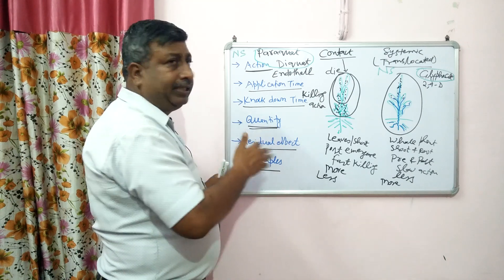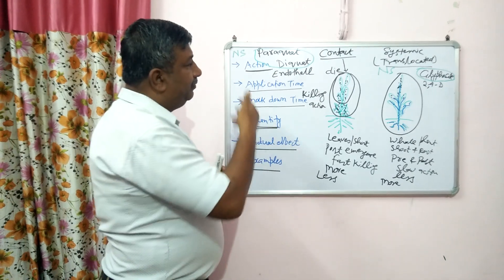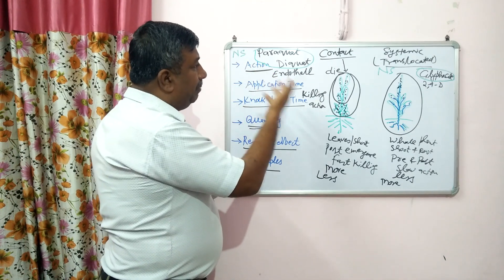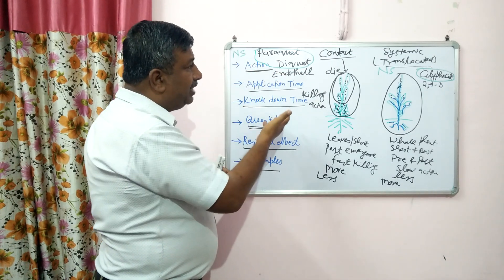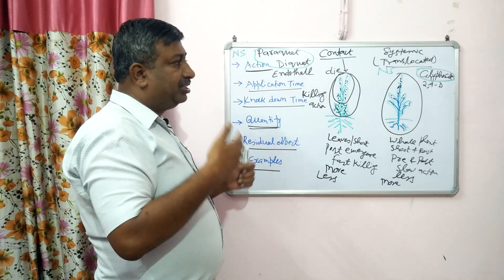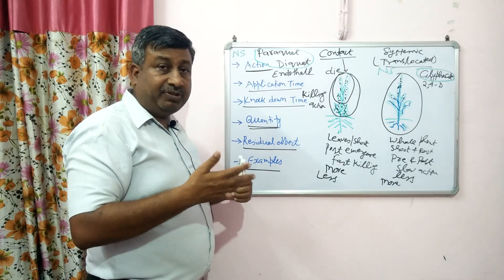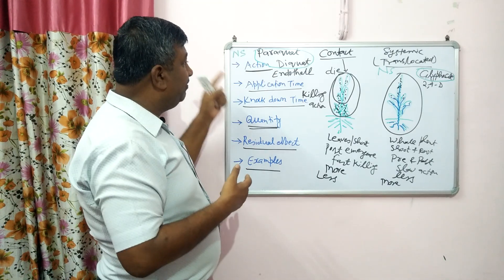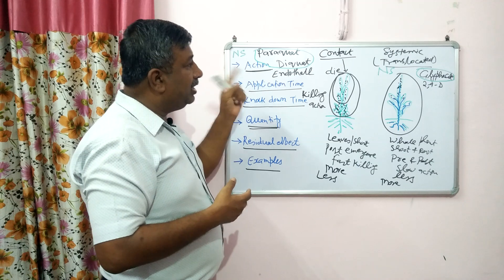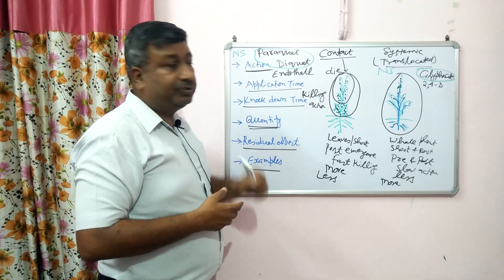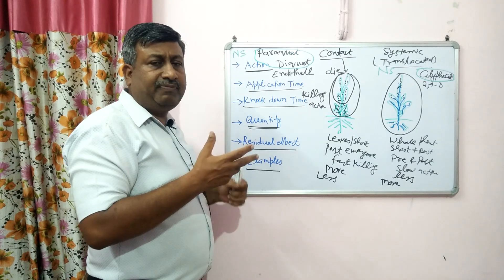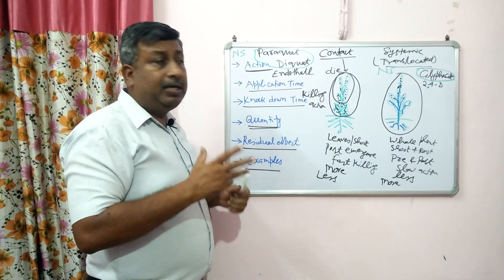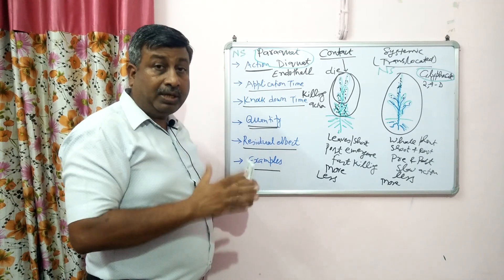For examination purposes: example of contact herbicide — paraquat, diquat. Example of systemic herbicide — glyphosate. Example of non-selective herbicide — paraquat, diquat, and glyphosate. Glyphosate is very common and popular, known by the trade name Roundup. Many other herbicides are systemic herbicides.